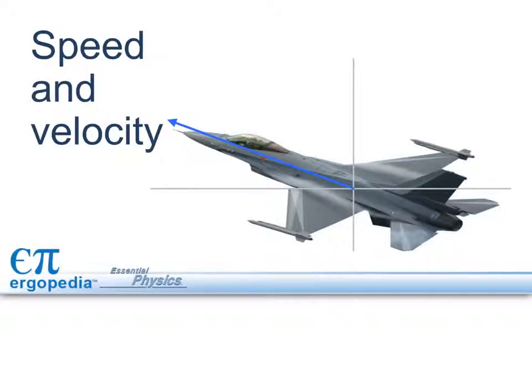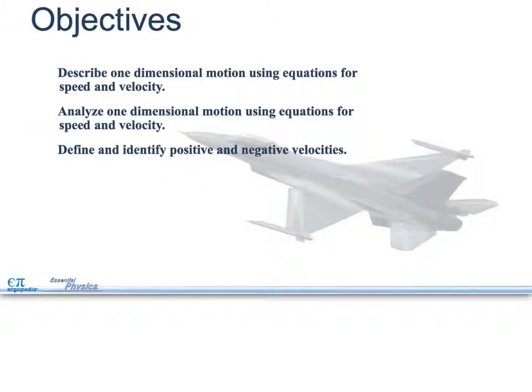Welcome to section 3.2. We're going to talk about speed and velocity now. Let's get started. Our objectives are: describe one-dimensional motion using equations for speed and velocity, analyze one-dimensional motion using equations for speed and velocity, and define and identify positive and negative velocities.